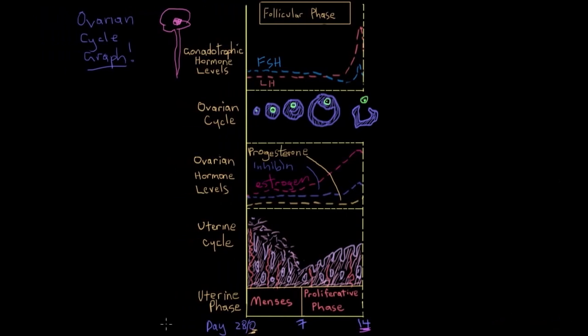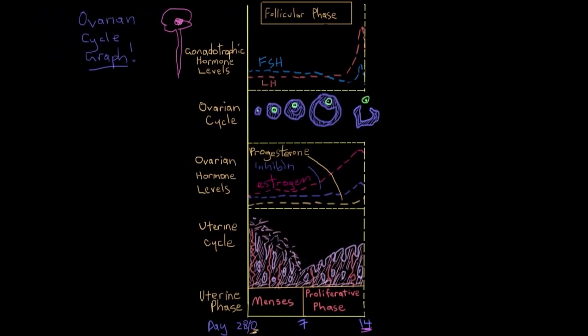So on day zero here, the anterior pituitary gland is releasing some FSH and some LH. And you can see those baseline levels here. And we know that the FSH is stimulating growth of the follicle here. And you can see it growing as the days go by. And while it grows, its number of granulosa cells is increasing, right? The granulosa cells are represented by this purple color here. And we know that granulosa cells secrete estrogen.